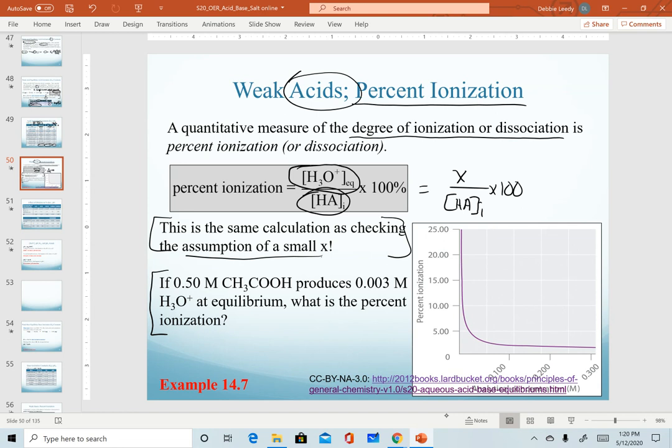And so we did that in the context of this question. When we were asked to calculate the pH of 0.50 molar acetic acid, we calculated that the hydronium concentration was 0.003 molar. Now we're asked to calculate what is the percent ionization. So again, our setup for this would be our x value.